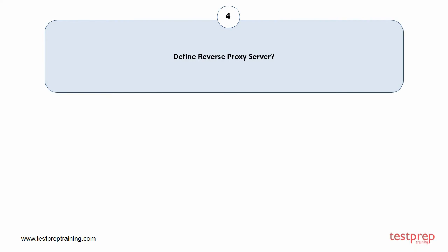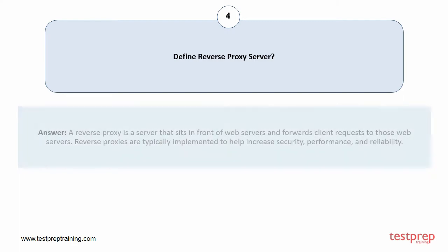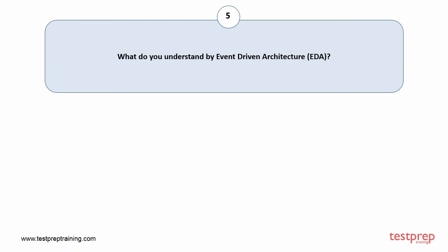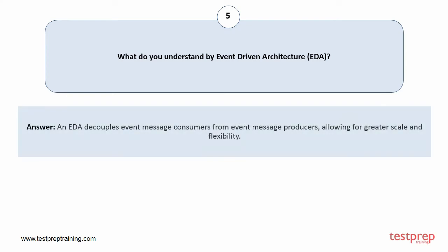Question number four: define reverse proxy server. A reverse proxy is a server that sits in front of web servers and forwards client requests to those web servers. Reverse proxies are typically implemented to help increase security, performance, and reliability. Question number five: what do you understand by event-driven architecture? Event-driven architecture decouples event message consumers from event message producers, allowing for greater scale and flexibility.